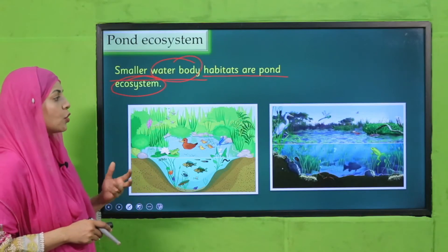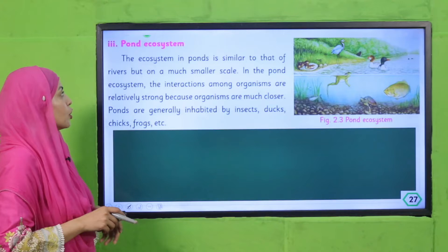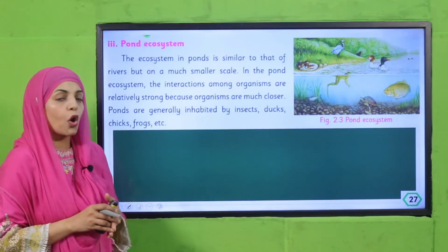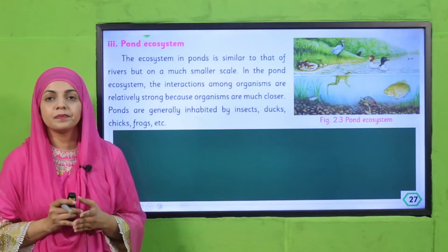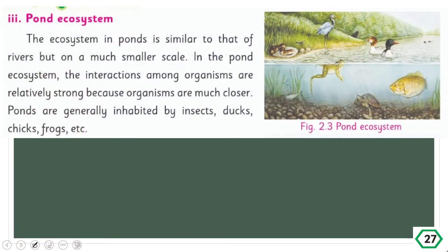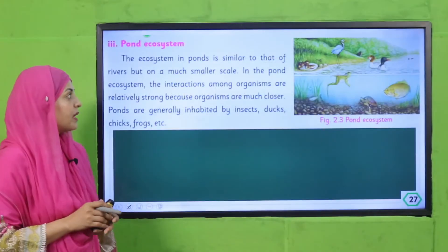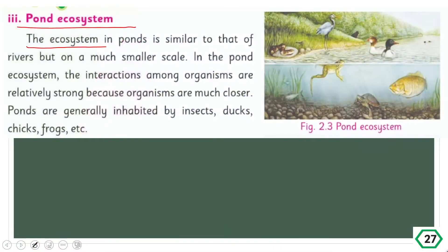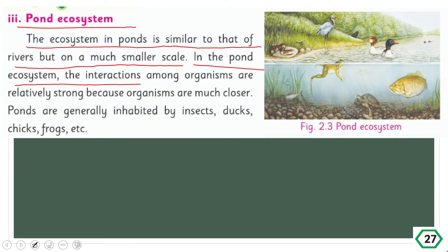Here are two types of ponds that you can see. Quickly open pond habitat in your books on page number 27. Let's start reading: the ecosystem in ponds is similar to that of rivers but on a much smaller scale. In the pond ecosystem, interactions among organisms are relatively strong because organisms are much closer.